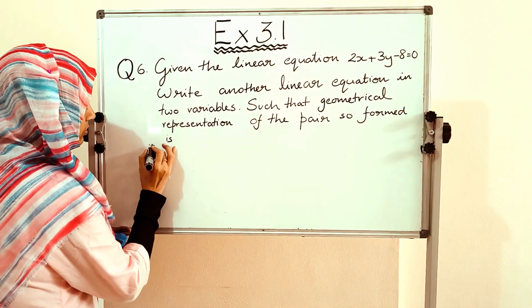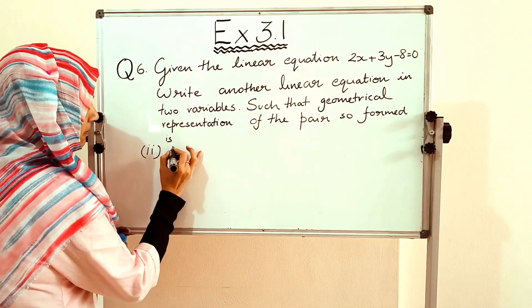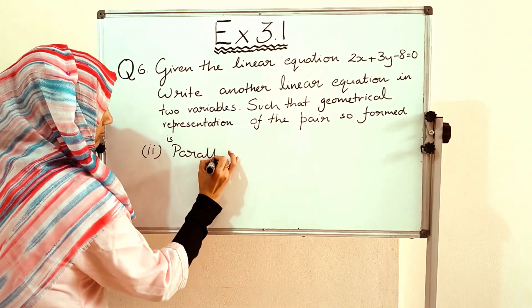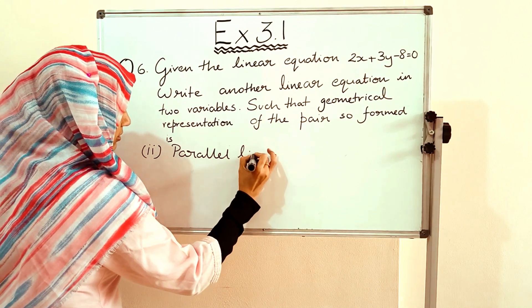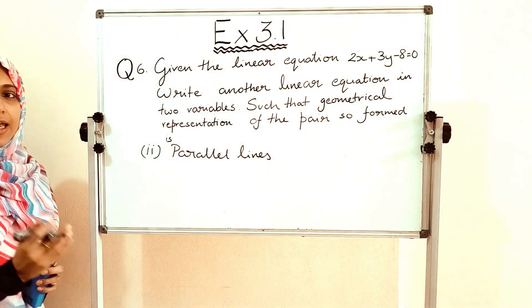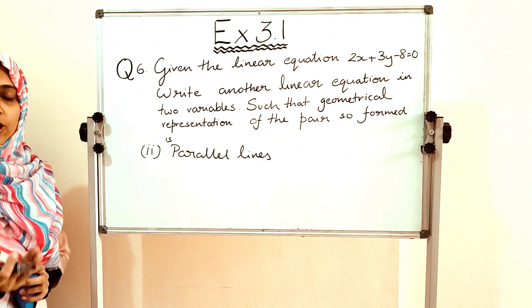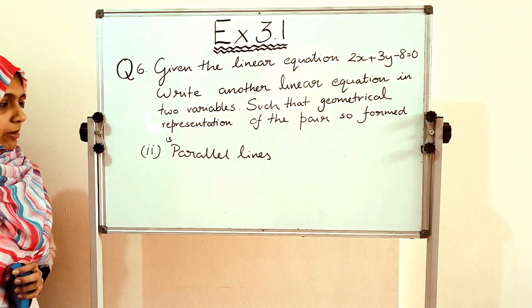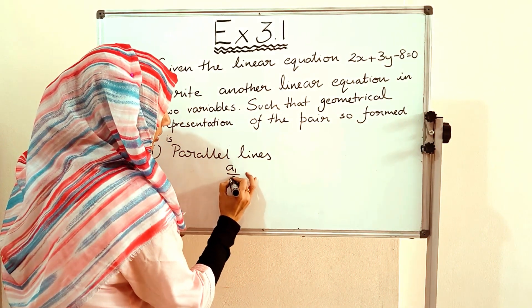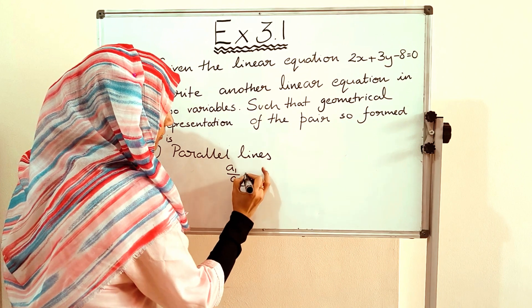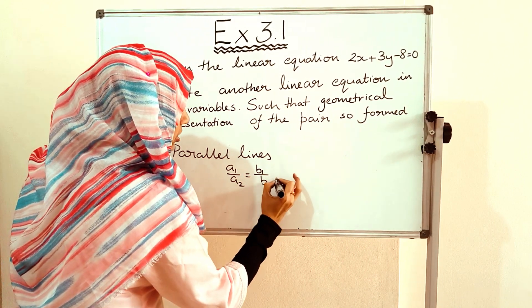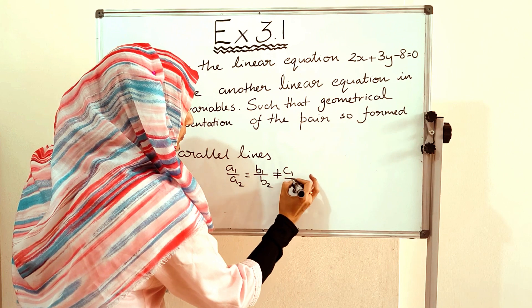Part 2: parallel lines. The condition for parallel lines is a1/a2 = b1/b2 ≠ c1/c2.